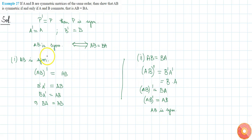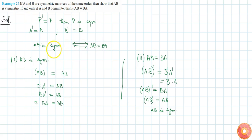So we have shown that if AB is symmetric then AB equals BA, and if AB equals BA then AB is symmetric, completing the proof.